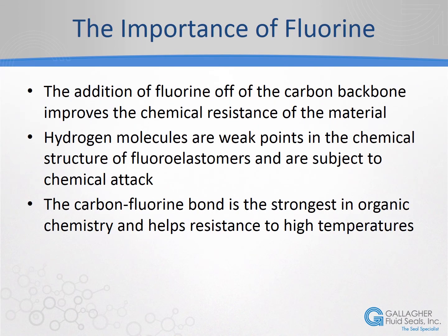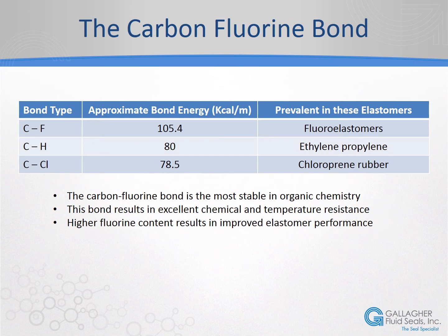The addition of fluorine to the basic elastomer structure serves two purposes. The large fluorine atoms increase the chemical resistance of the elastomer by shielding the carbon backbone from chemical attack. At locations where hydrogen atoms are connected to the polymer backbone, these points are weak points in the elastomer structure. The carbon-fluorine bond is the most stable bond in organic chemistry, and this bond strength results in the excellent high temperature performance of fluoroelastomers. This chart shows the relative bond strengths for different carbon bonds. The very stable carbon-fluorine bond is the reason fluoroelastomers outperform other elastomers, which have more carbon-hydrogen or carbon-chlorine bonds. To summarize, high fluorine content in the elastomer results in better overall performance.